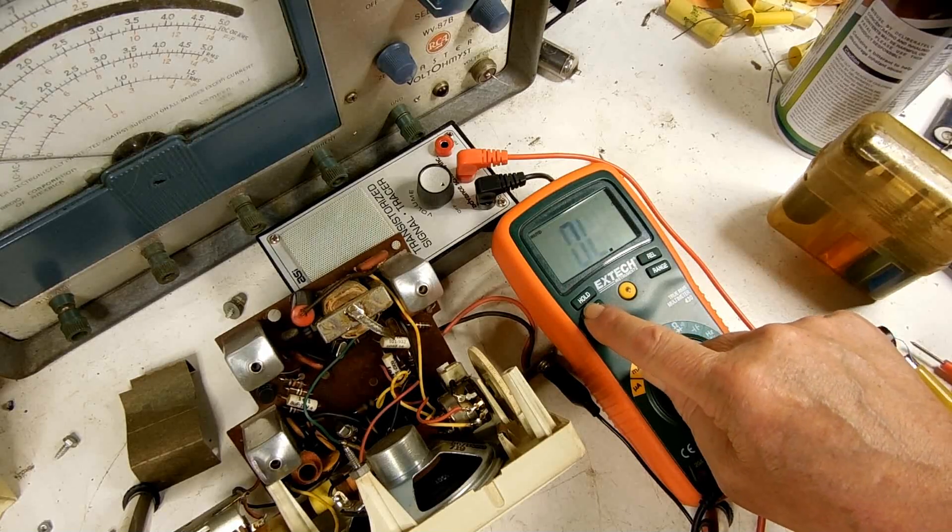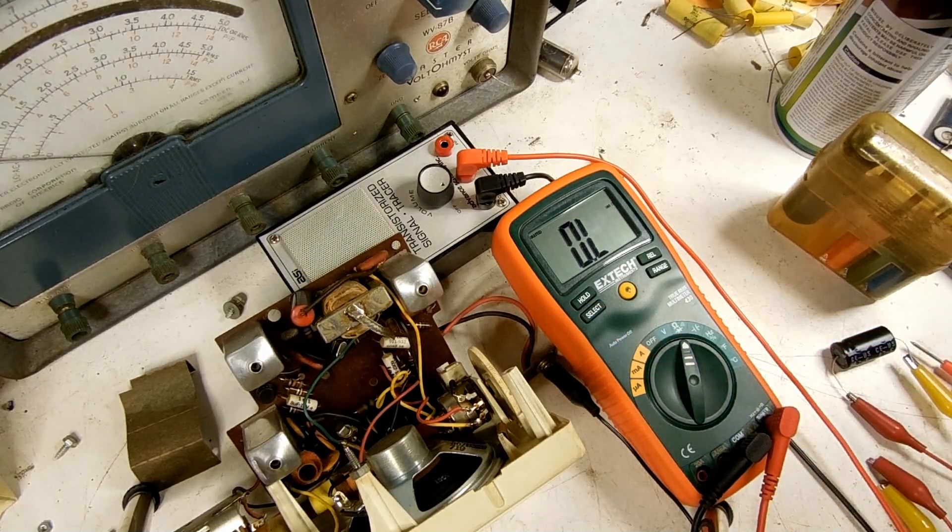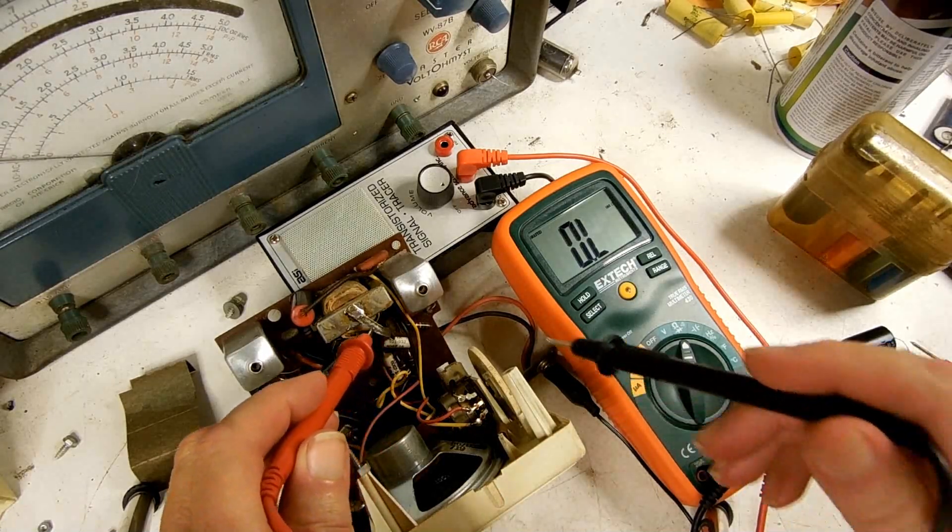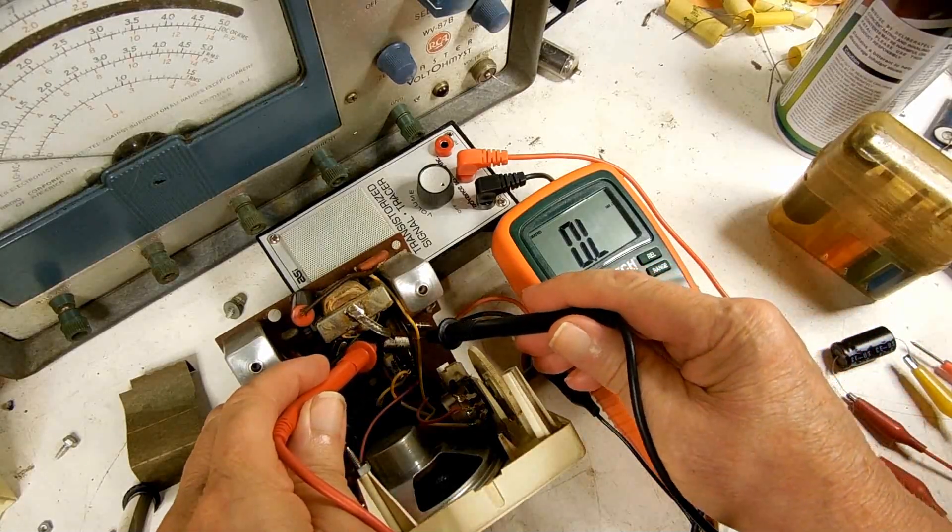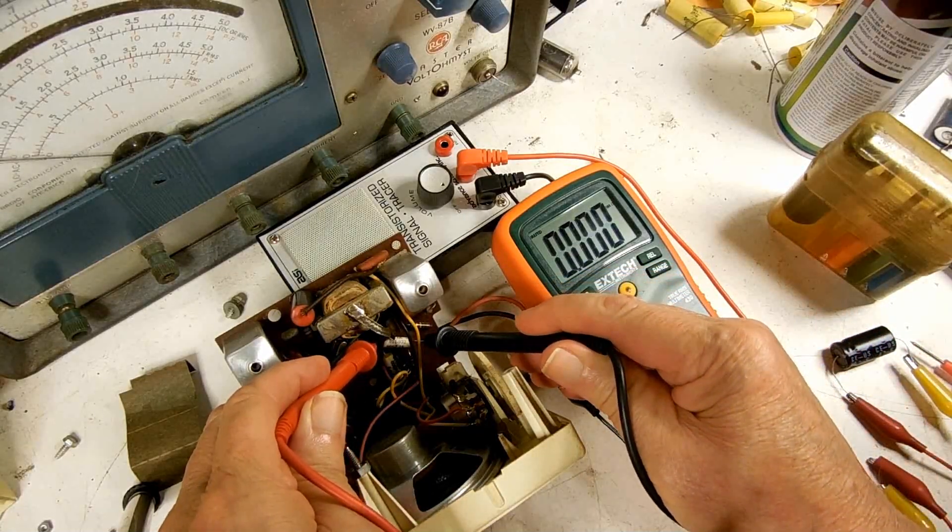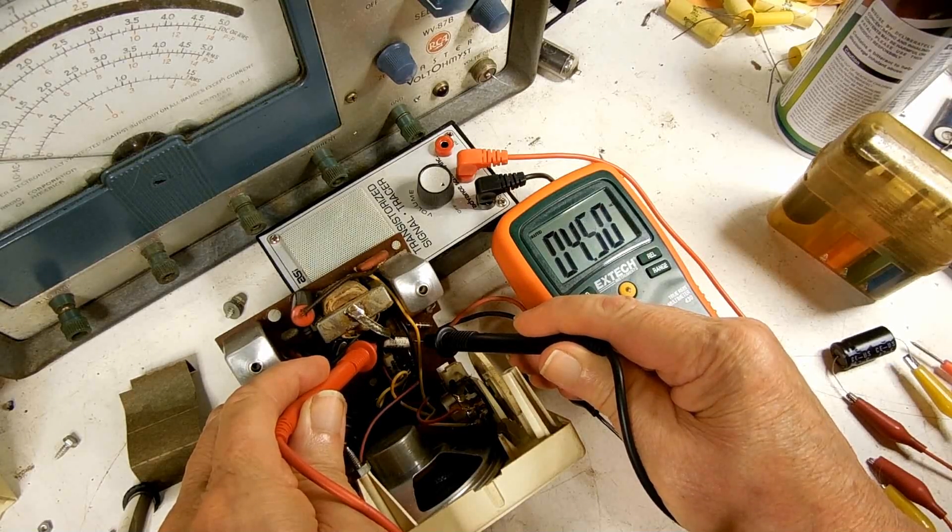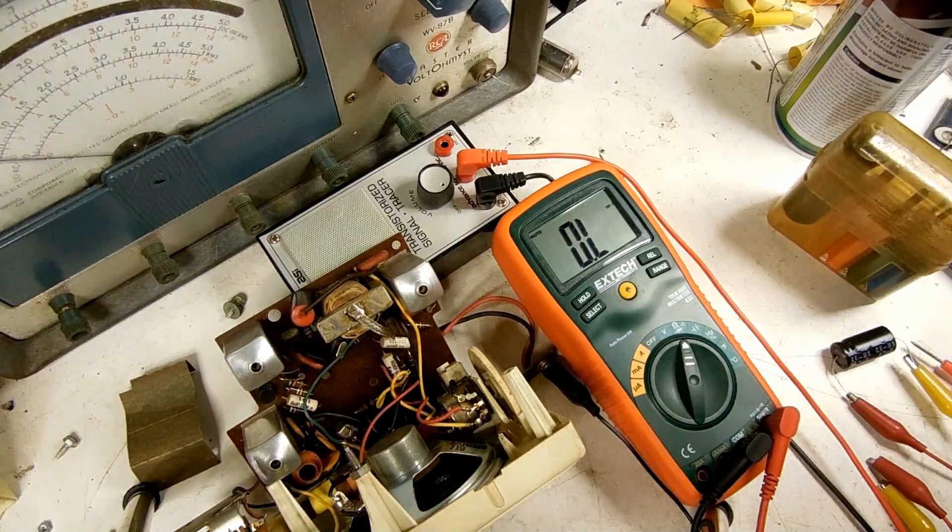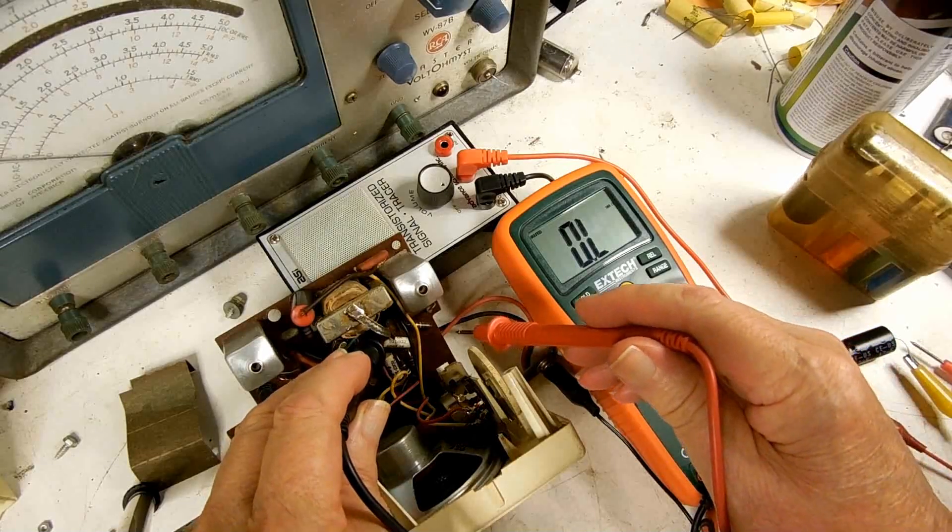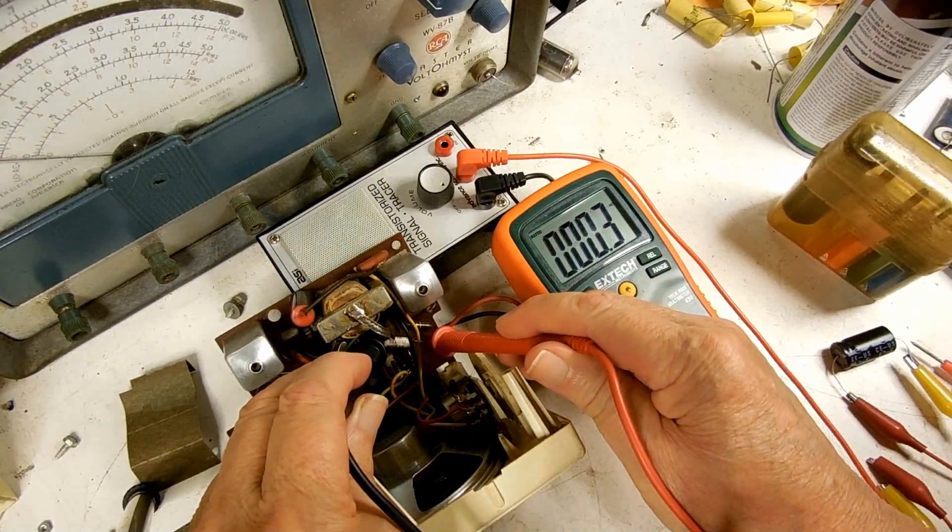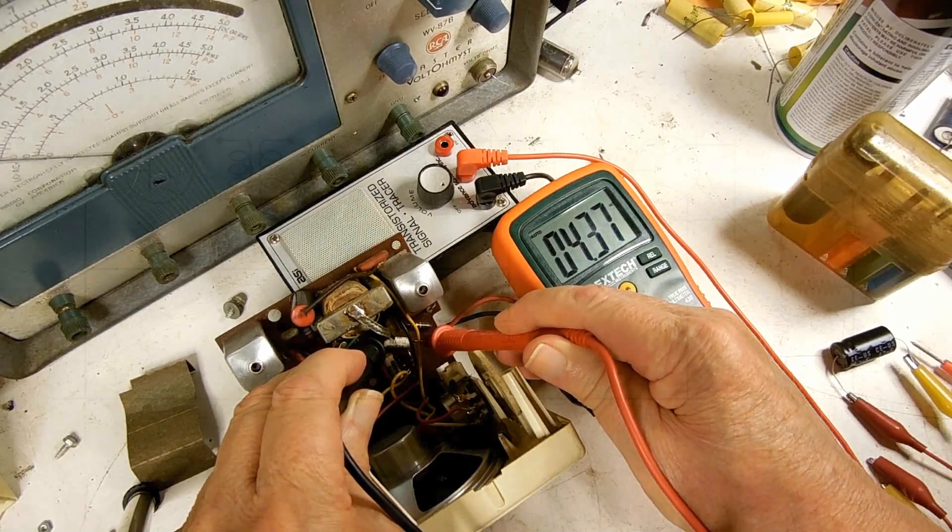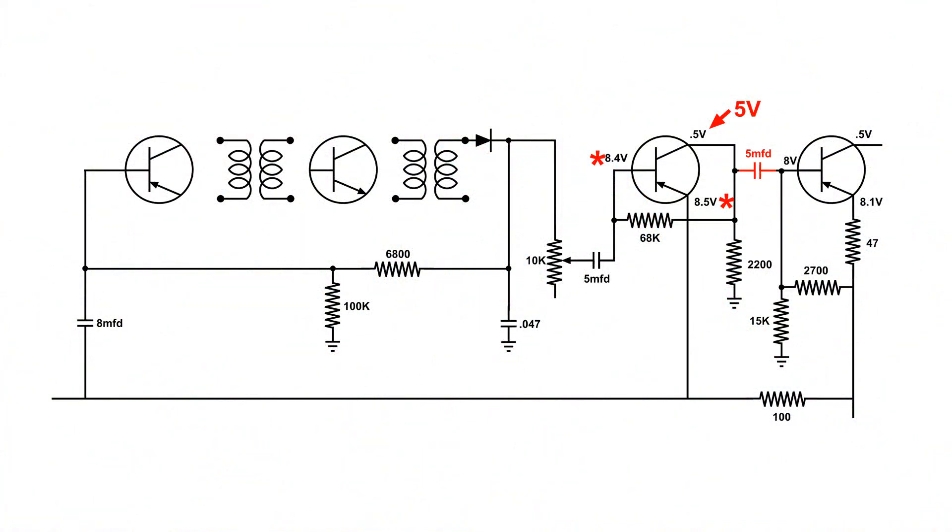I just checked the meter to make sure that's set on ohms and not to read diodes so it doesn't turn on the junctions in the transistors. And the ohms of this capacitor seems to be around 4000, reading through a couple of other resistors. But when I turn the leads around, it still reads the same, so we are not going through those transistors. Now I'm going to replace that capacitor and we'll give it a test and see what happens.